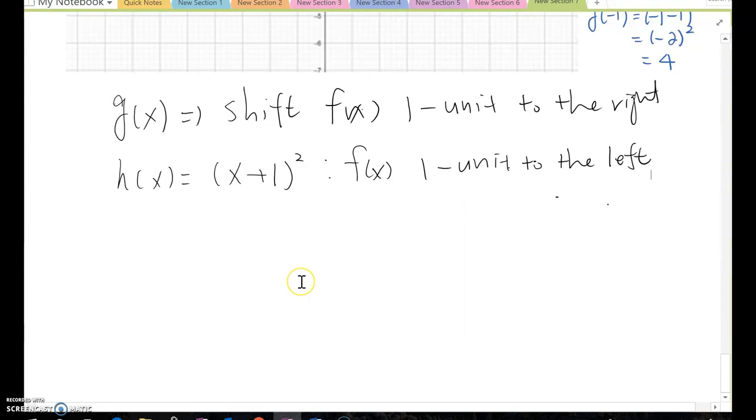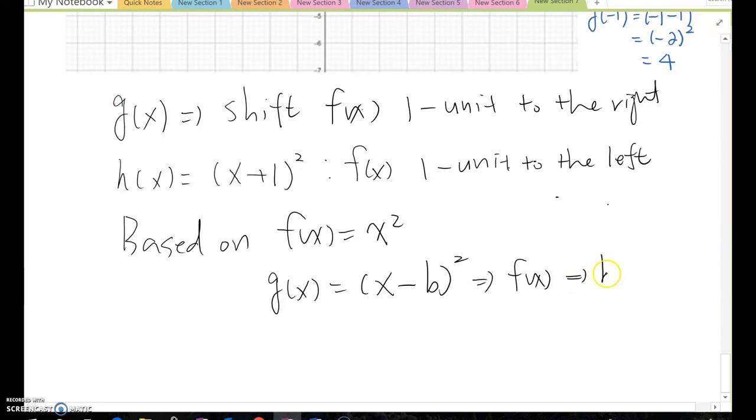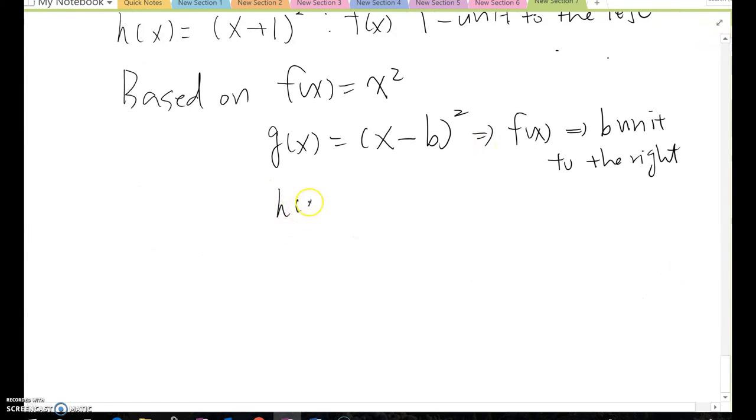Now the conclusion. Based on the given f(x) = x², if any function is given such as g(x) = (x-b)², then you can say f(x) moving toward b units to the right. And then if I give you h(x) = (x+b)², the same thing, f(x) shifts b units to the left. That's what we can conclude.